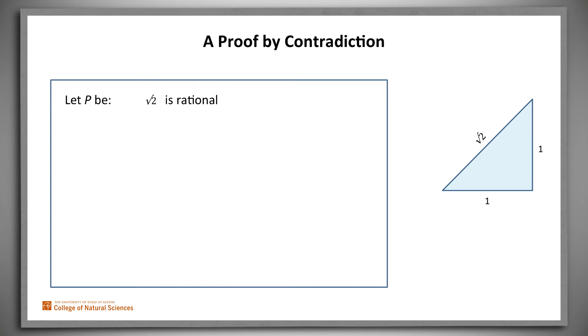Let p be the claim that the square root of 2 is rational. We want to prove not p. So we assume p. We do some reasoning, omitted here, to derive a contradiction. Then, since p leads to a contradiction, it must be false. By the Law of the Excluded Middle, not p is true.